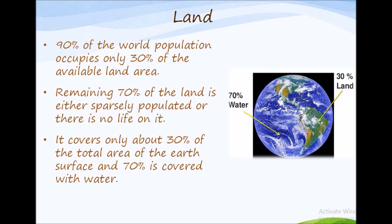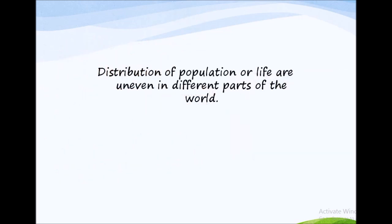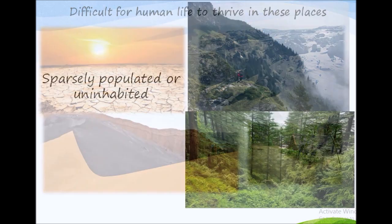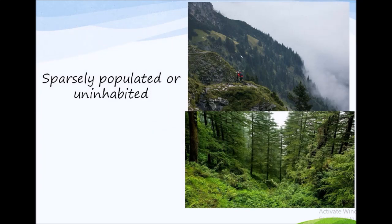Moreover, not all of this 30% is habitable, meaning the distribution of population and life is uneven in different parts of the world. This is mainly due to various characteristics of land and climate. Rugged topography — referring to rocky or rough terrain — makes it difficult for human life to thrive. Steep slopes of mountains, low-lying areas prone to water logging, desert areas where water scarcity is a constant problem, and dense forest areas are all sparsely populated or uninhabited regions.